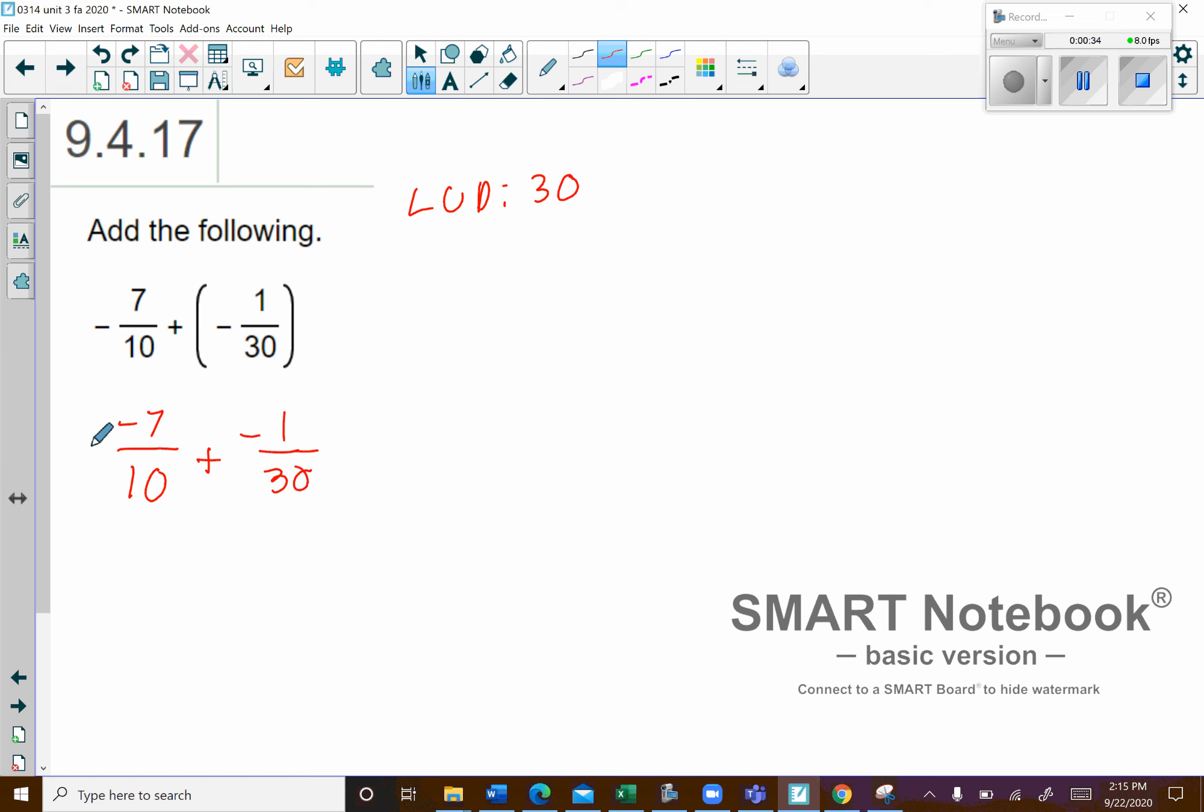So I went ahead and moved those negatives out in front to the numerator. Now what I'm going to do here is multiply that first fraction by 3 over 3, which is really a glorified 1, right? That's just a 1 right there, and so in doing so,